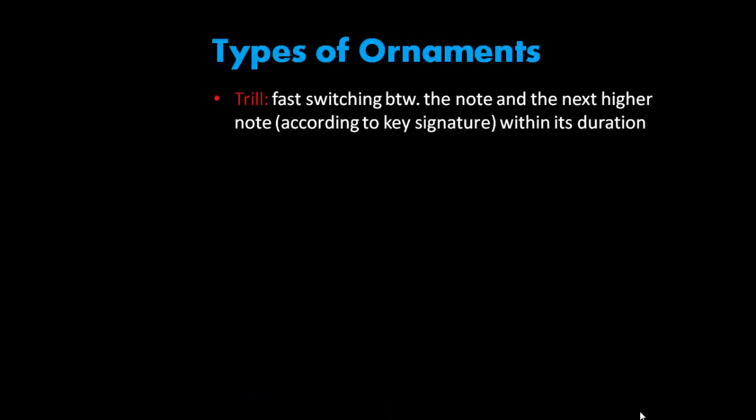The first ornament is called the trill, and it is probably the most common ornament out there. It is a fast switching between the note and the next higher note, according to the key signature, with an oscillation. Trills look like that, and they sound like this.